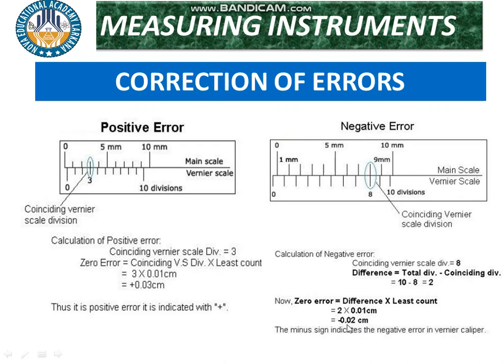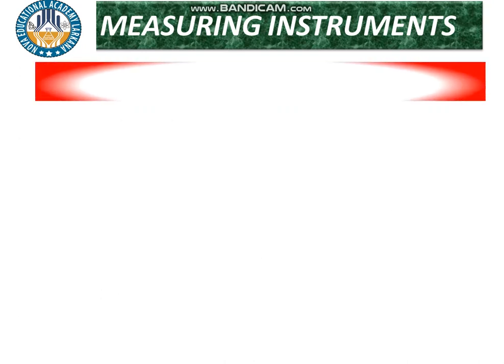For the total reading, when there is a negative error, we subtract it from our measurement to get the corrected value with great accuracy. To summarize the Vernier Caliper: we covered its parts — the fixed main scale, movable Vernier scale, measurements in millimeters and centimeters, 10 total divisions — and the types, functions, working, errors, and corrections.